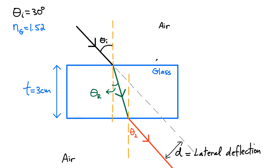I've cleaned up the diagram a little bit. We have air on the outside and then we have a glass slab. I'm going to set the index of refraction of the glass slab to 1.52. I'm also going to consider an incident angle of 30 degrees. The thickness of the glass slab is 3 centimeters. I've labeled the refracted angle as theta R and there's also an outgoing angle which I'm going to call theta 2.